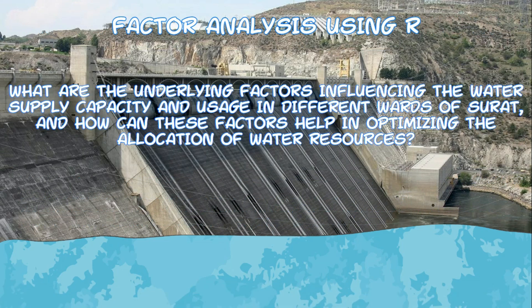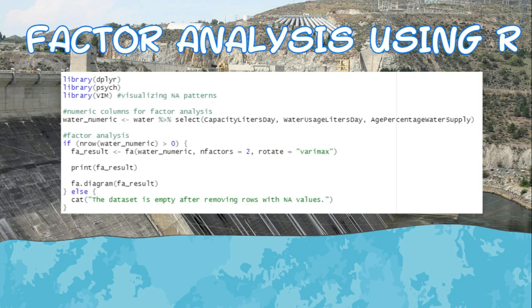Now here's a factor analysis using R — another multivariate analysis. The question is: what are the underlying factors influencing the water supply capacity and usage in different wards of Surat, and how can these factors help in optimizing the allocation of water resources? Here's the code I used: I used the psych, dplyr, and fin (visualizing NA factors) libraries, and converted the numerical columns for factor analysis.